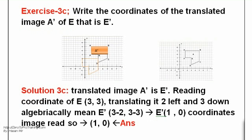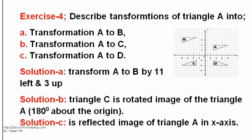Exercise 3C: Write the coordinates of the translated image are A' that is EB algebra and image is (1, 0). Exercise 4: Transformation of triangle. A: B is 11 left and 3 up. B: C is rotated image 180. C: DG is about origin. D: Reflected image in X axis.